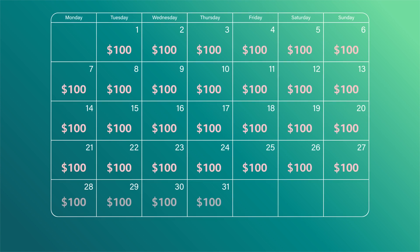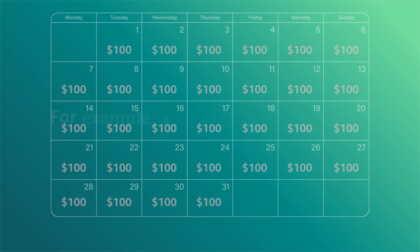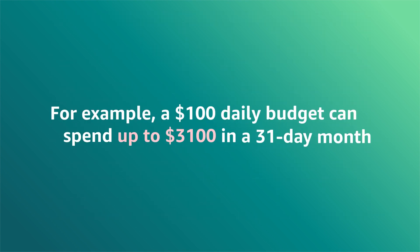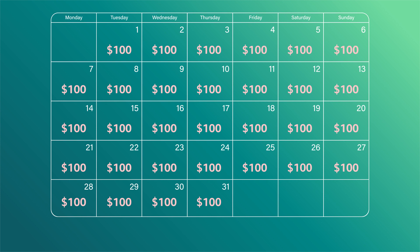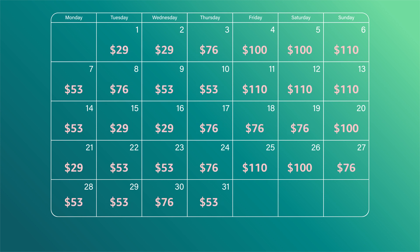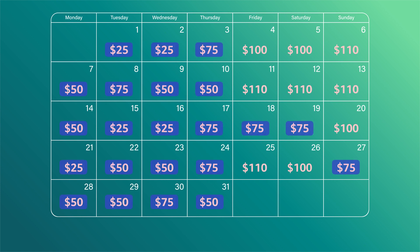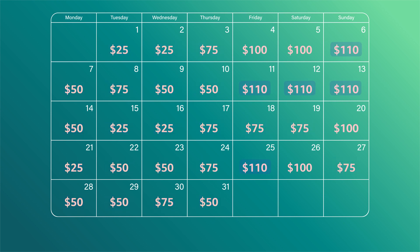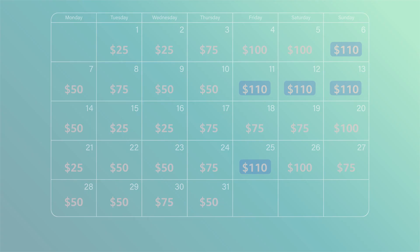For example, if you set your daily budget to $100, you may spend up to $3,100 in a 31-day calendar month for all of the clicks your ads generated. Setting a daily budget doesn't mean you will spend all of it each day. The daily budget gives you flexibility to spend less on days that are low traffic and up to 10% more to take advantage of high traffic days.